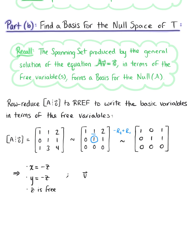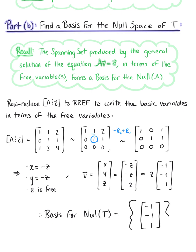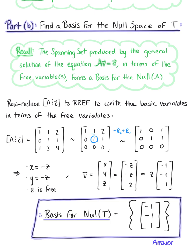So we can write the general solution vector v as the vector in R³ with components x, y, z, where x equals negative z, y equals negative z, and z is free. Factoring out the common scalar z, we have z times the vector (−1, −1, 1). Therefore, a basis for the null space of our linear transformation is the set containing the single vector (−1, −1, 1). This is our final answer.